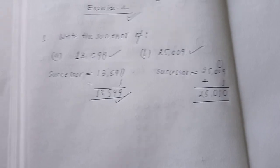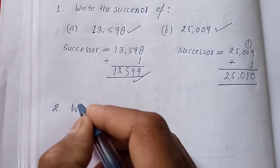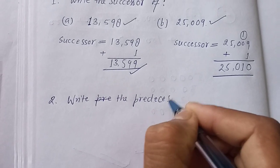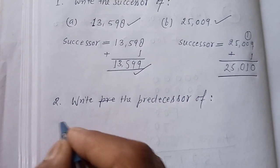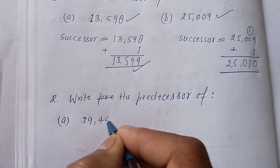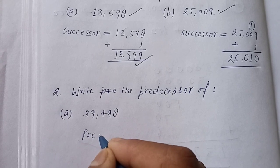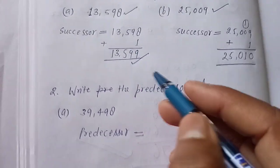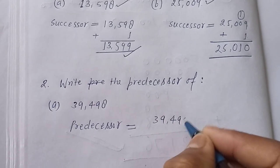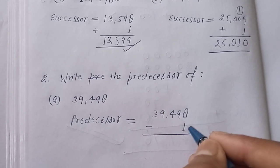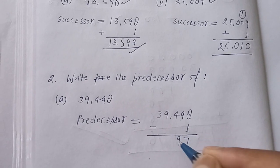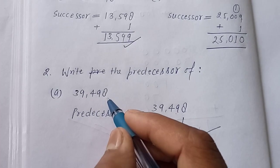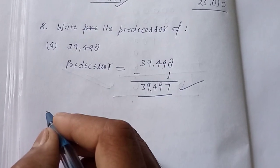You can do the other questions similarly. Now let's move to question number 2, which says: write the predecessor. Here we need to find the predecessor. For the successor we added 1 to the number; for the predecessor we subtract 1 from the given number. So for 39,498 — 8 minus 1 is 7, and the remaining digits are 9, 4, 9, 3 — so 39,497 is the predecessor of 39,498.